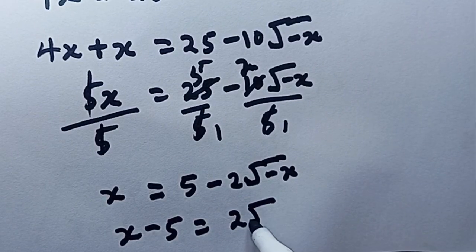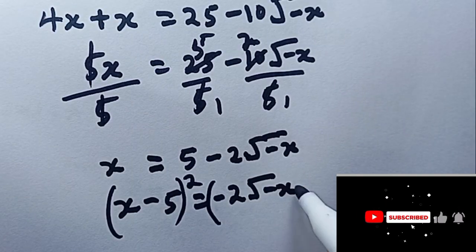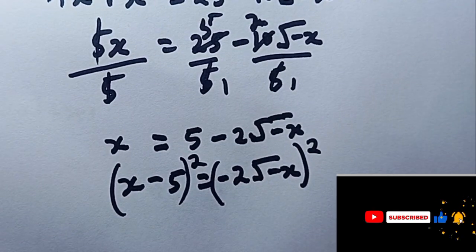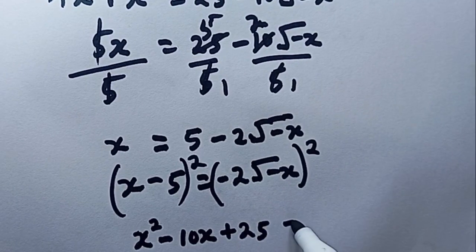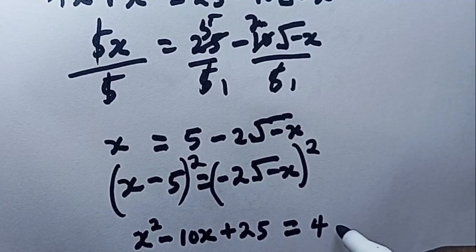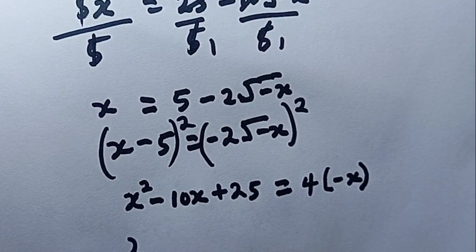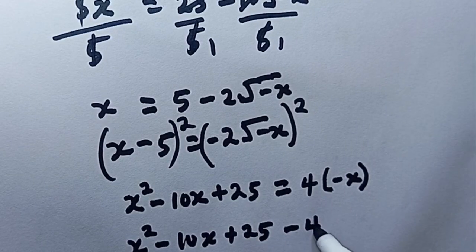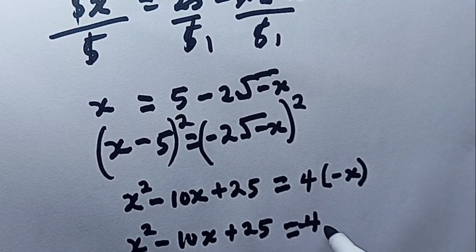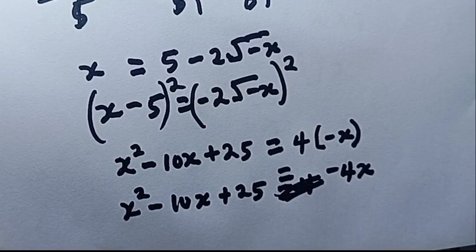Subtracting 5 from both sides isolates the radical on the right: x - 5 = -2·root(-x). Squaring both sides again to remove the remaining radical gives (x - 5)² = 4·(-x), which expands to x² - 10x + 25 = -4x.